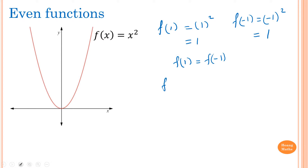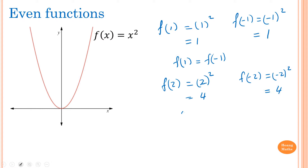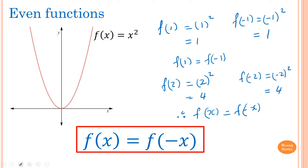Let's evaluate f(2). So f(2) is 2 all squared, which is 4. And f(-2) is equal to negative 2 all squared, which is also 4. So you can see that f(2) equals f(-2). Therefore, f(x) is equal to f(-x). In general, for an even function, f(x) is equal to f(-x).